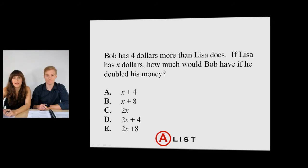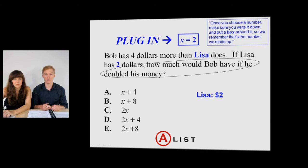Alright, we've got: Bob has four dollars more than Lisa does. If Lisa has X dollars, how much would Bob have if he doubled his money? So first step, I would say stick with all the systematic, fundamental, general strategies. Circle or underline what the question's asking for. So we're looking for what Bob would have if he doubled it.